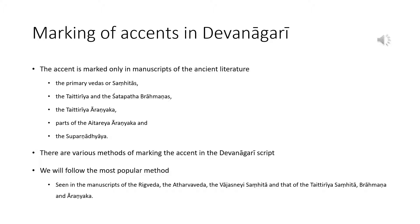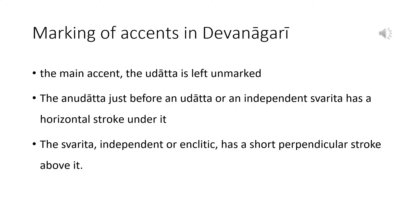There are various methods of marking the accent in the Devanagari script. We will follow the most popular method — the one found in the manuscripts of the Rigveda, the Atharvaveda, the Vājasaneya Samhitā and that of the Taittirīya Samhitā, Brāhmaṇa and Āraṇyaka. In this method, the main accent, the udātta, is left unmarked. The anudātta just before an udātta or an independent svarita has a horizontal stroke under it. The svarita, independent or enclitic, has a short perpendicular stroke above it.